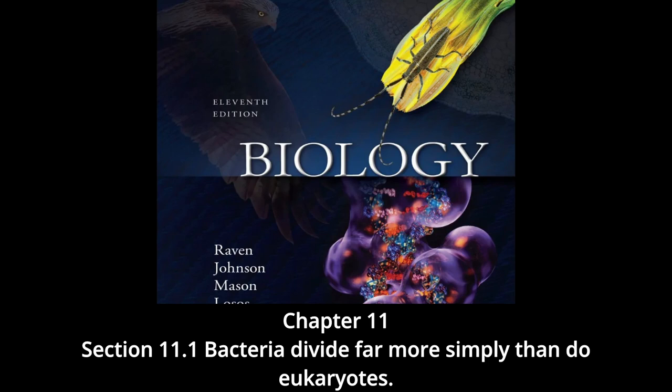The DNA circle is attached at one point to the cytoplasmic surface of the bacterial cell's plasma membrane. At a specific site on the DNA molecule called the replication origin, a battery of more than 22 different proteins begins the process of copying the DNA. When these enzymes have proceeded all the way around the circle of DNA, the cell possesses two copies of the genome. These daughter genomes are attached side by side to the plasma membrane. The growth of a bacterial cell to about twice its initial size induces the onset of cell division.